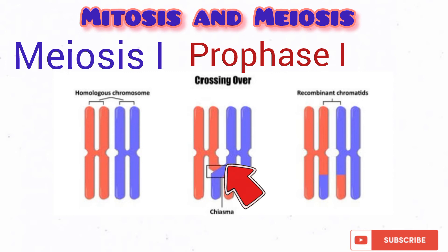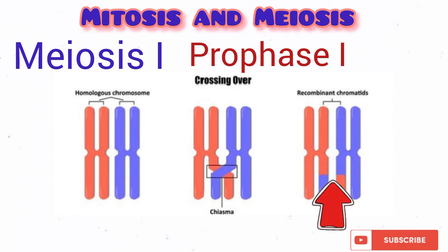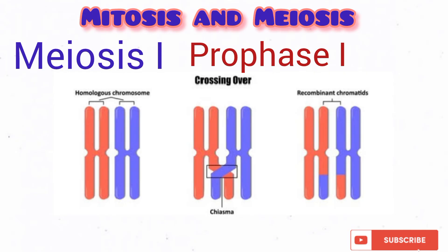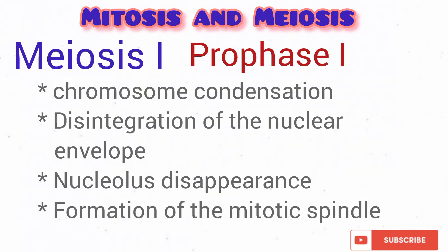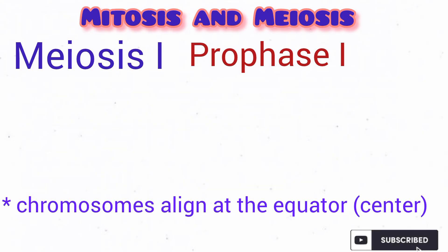After crossing over, the chromosomes separate and move apart. Other events that occur in prophase 1 also occur in the mitotic prophase, such as disintegration of the nucleolus, disappearance of the nuclear membrane, and condensation of the chromosomes.